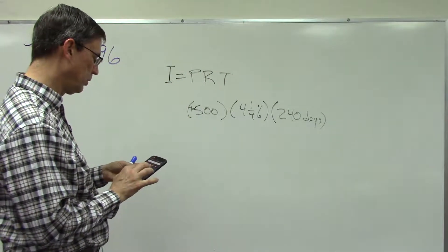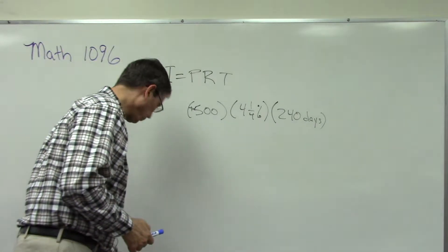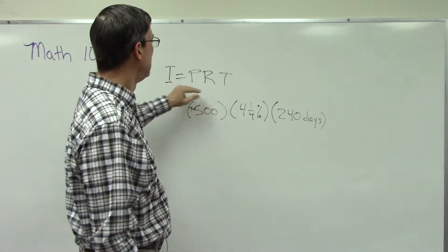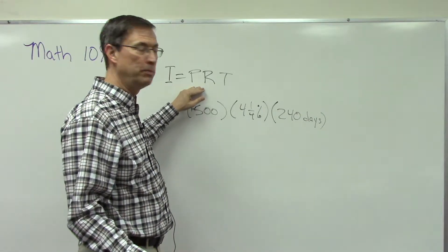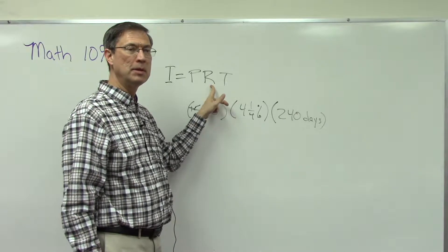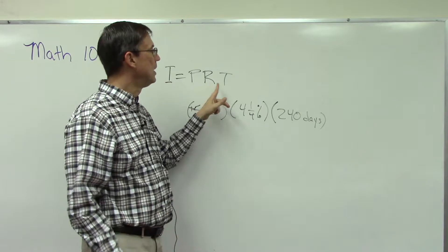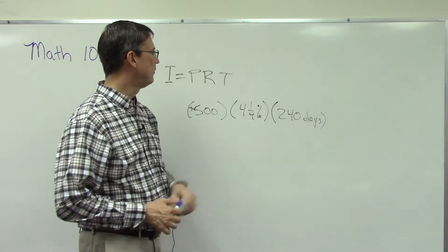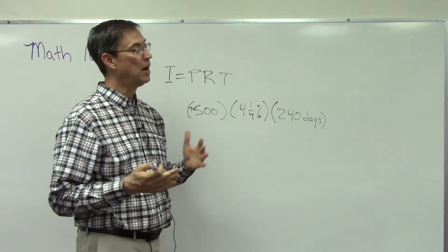Let me get my phone out and put it on calculator mode. Remember from a previous PACE, this formula: interest can be calculated by multiplying the principal — that's the amount being borrowed — times the rate. The rate is always given as a percent but we have to convert it into a decimal, and then times the time.